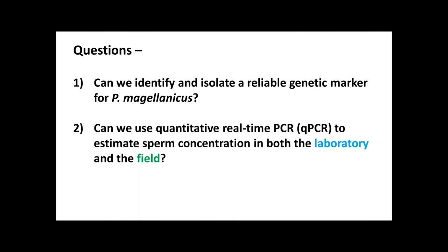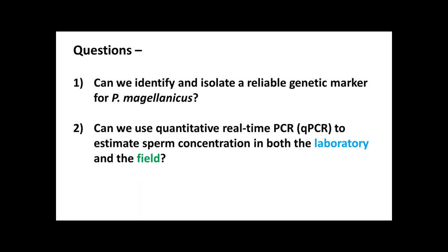What we did is we identified and isolated a genetic marker for sea scallops, which we hadn't really found in the literature before. Then we developed a quantitative real-time PCR method to estimate sperm concentration, which is presumably an indicator of a spawning event in both the laboratory and the field. So PCR — polymerase chain reaction — is a molecular technique used to amplify DNA in small quantities, which makes it easier to measure and see how much is there. Quantitative PCR is when you measure this PCR amplification over time.